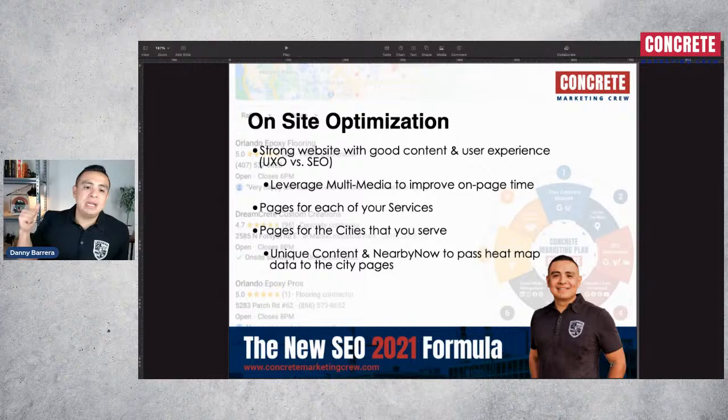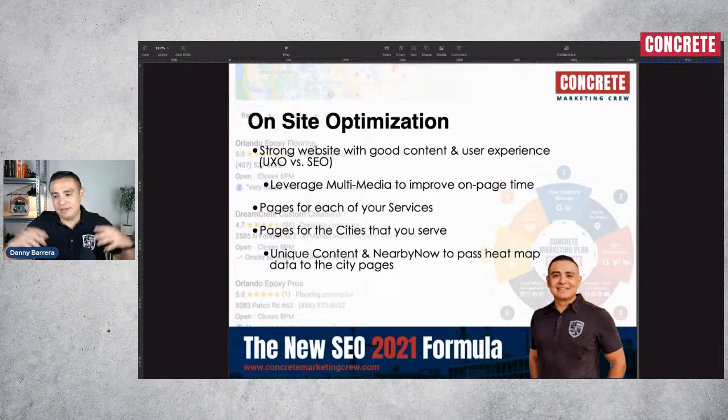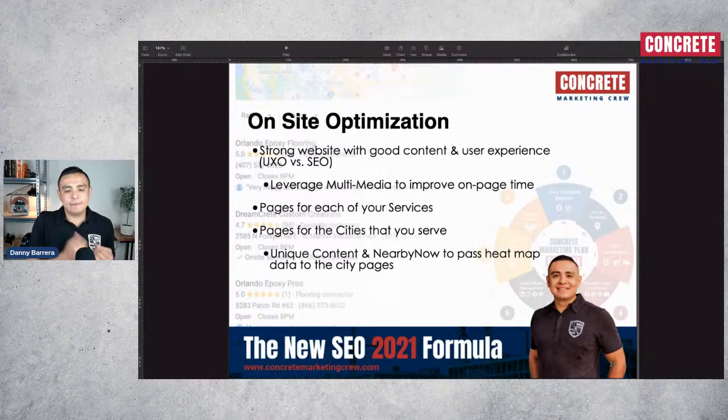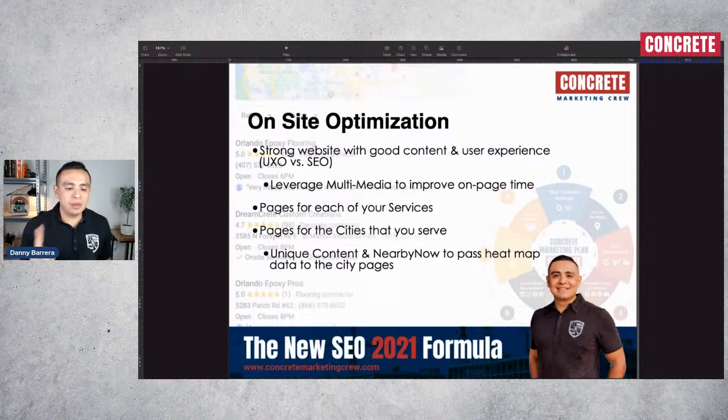So where does it all start in 2021? The very first point is building a strong website with good content and user experience. Some people use the term UX — user experience — or UXO, user experience optimization. The user experience takes multiple layers, but the first is content: does the content answer that specific searcher and does it help solve a problem?